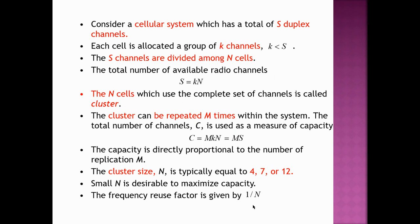To measure the capacity of a cellular system with a total of S duplex channels: each cell is allocated k channels, and with N cells per cluster the total available radio channels is S = k × N. The total capacity equals M × k × N, which is approximated as M × S, where M is the number of cluster replications. Therefore, capacity is directly proportional to M.